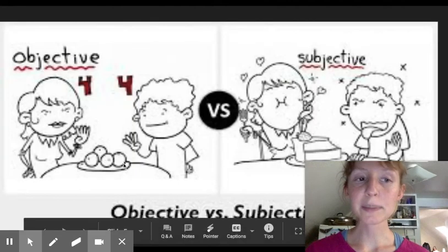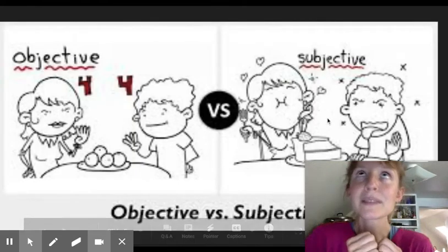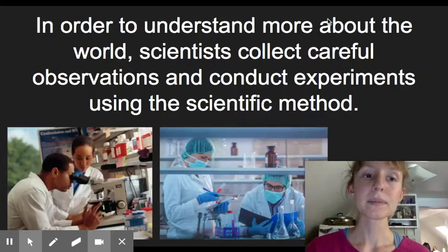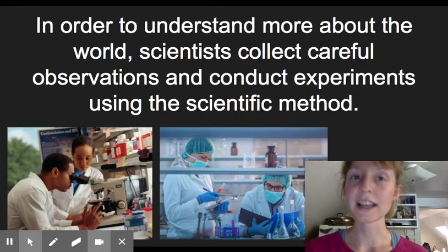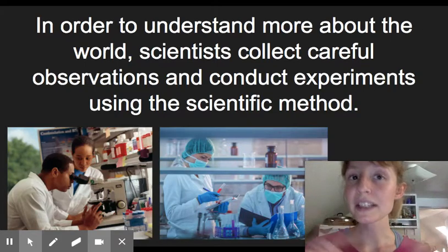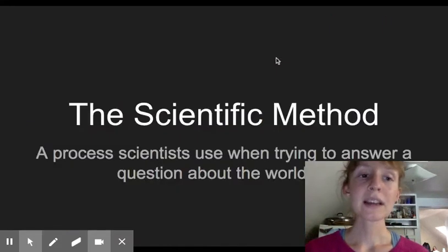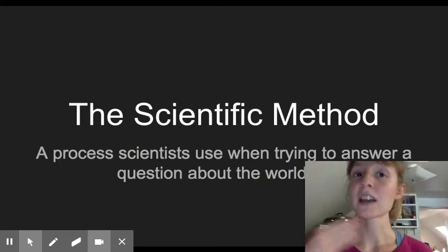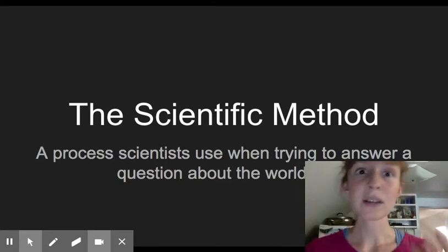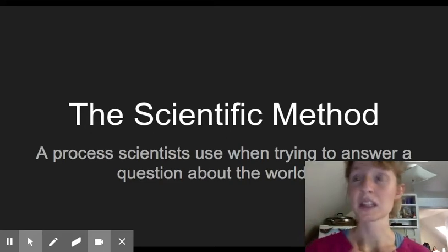Counting the oranges on this plate is objective, saying I love cake, subjective. So in order to understand more about the world, scientists collect careful observations and conduct experiments using what we call the scientific method. And the scientific method is a process that scientists use when trying to answer questions about the world. And by using the scientific method, they're able to collect and repeatedly collect numbers and measurements and observations that allow them to make those objective conclusions, meaning it's not just an opinion, it's based on this repeated observation.